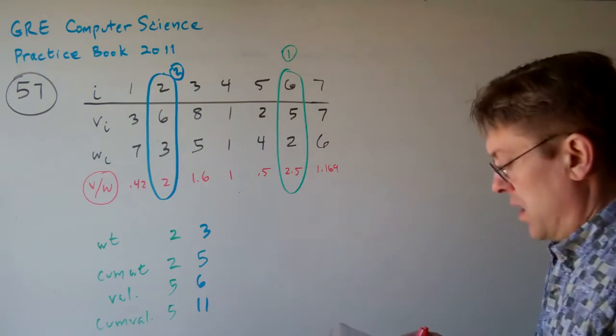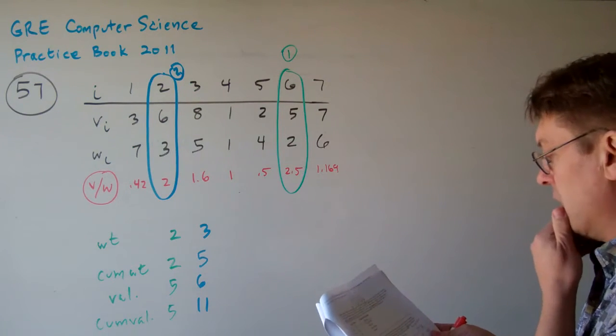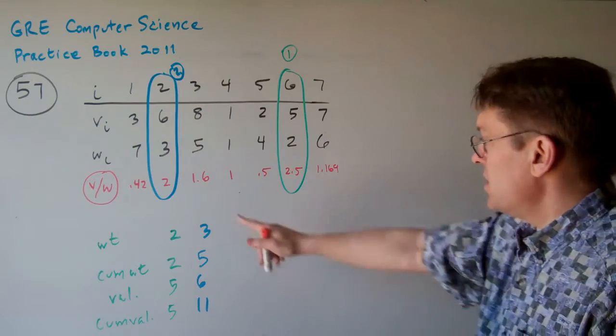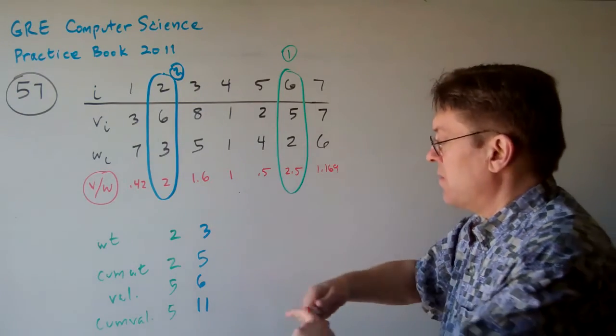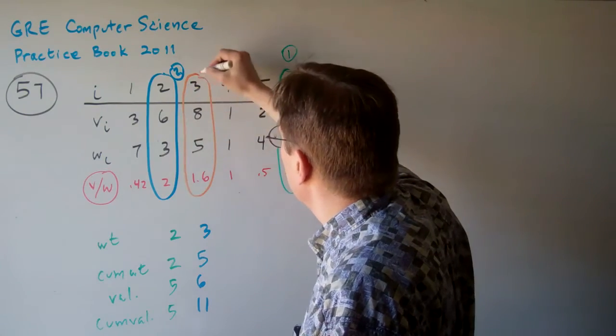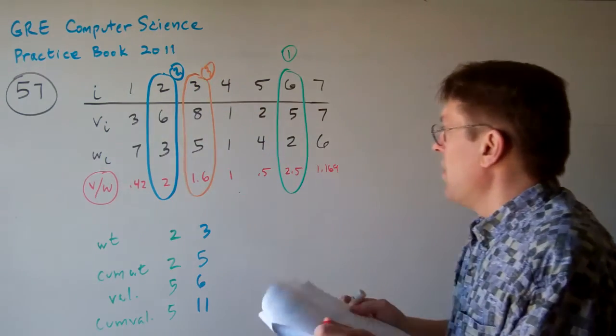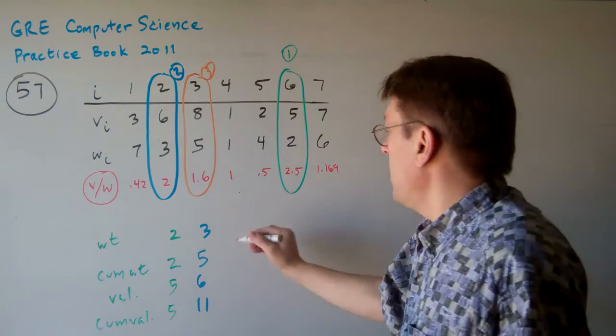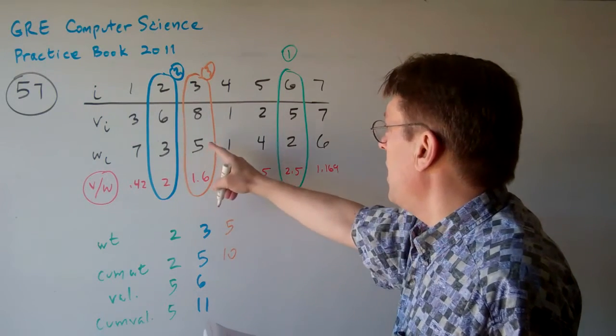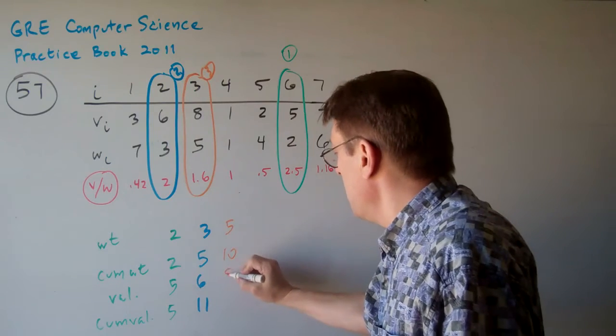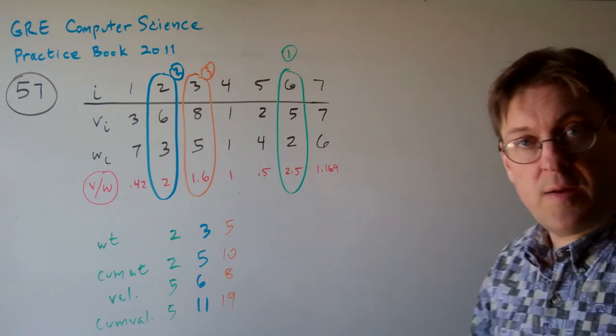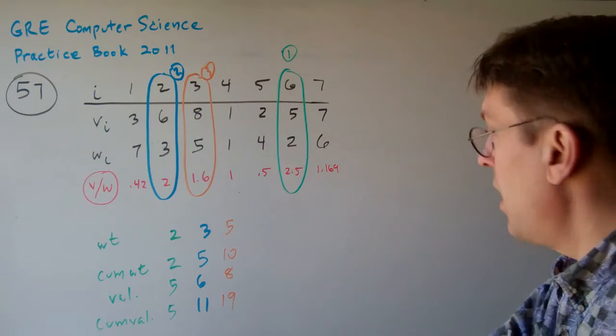Let's try the third one. The third one is going to be 1.6, item 3 here, is the next best solution. So item 3. That has a weight of 5, which gives our cumulative weight 10. It has a value of 8, which gives our cumulative value 19. I hope you're following me along on this one.